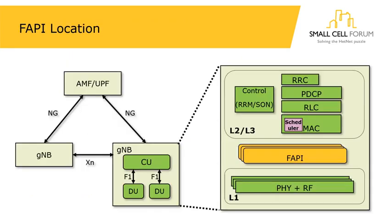So where is PHY API located? This diagram shows the 3GPP's impression of a 5G network — we have our AMF, our UPF forming the 5G core, and then our gNB base stations making up our RAN. Within that base station we have this disaggregation, so we have CUs and DUs, and 3GPP does specify the F1 interface. From a logical perspective inside the base station, we have our layer 2 and layer 3 stacks — MAC, RLC, PDCP, and RRC functions — and underneath that we have layer 1, the PHY and the RF.